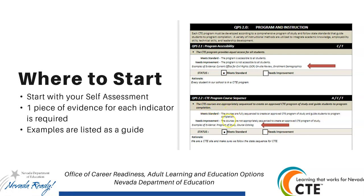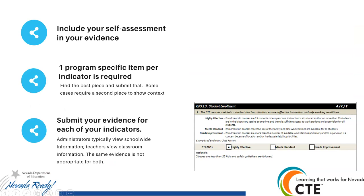You can read through the needs and the highly effective rubric to help you respond to these indicators. You want to include your self-assessment in your evidence — that's part of it. And here's a little hint: that responds to indicator 8.1, so that would be where you might want to put it.